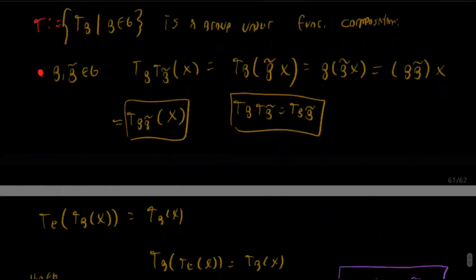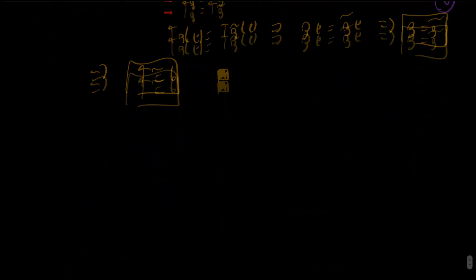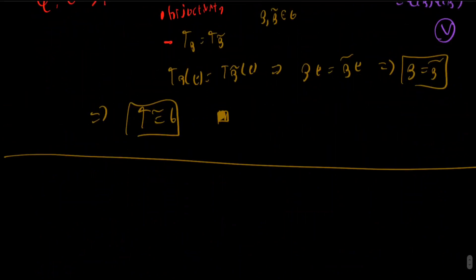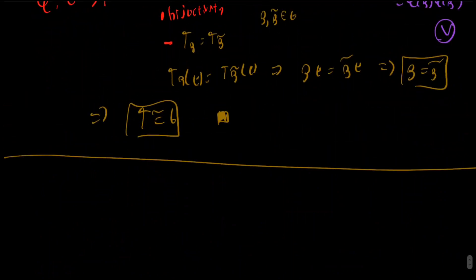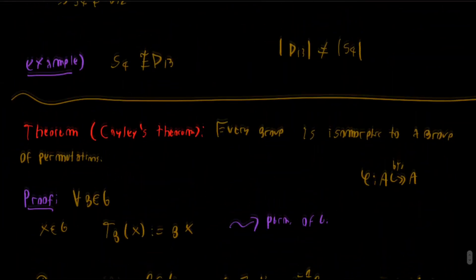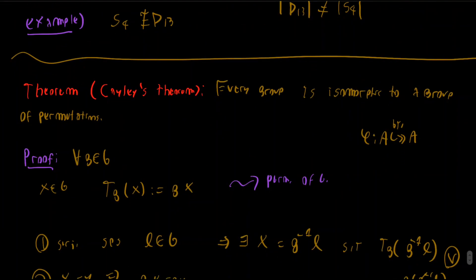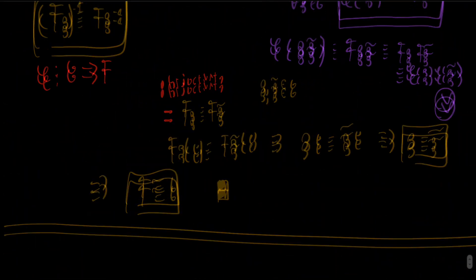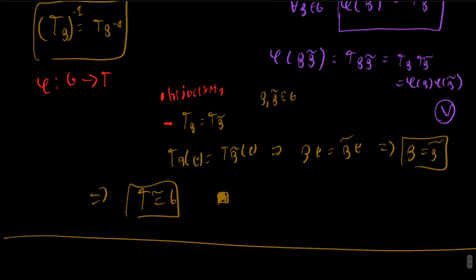This is a very important result in group theory because it links the historical evolution of the idea of a group — which started out as the study of groups of permutations — to the modern abstract formulation of the concept of a group that we study nowadays.